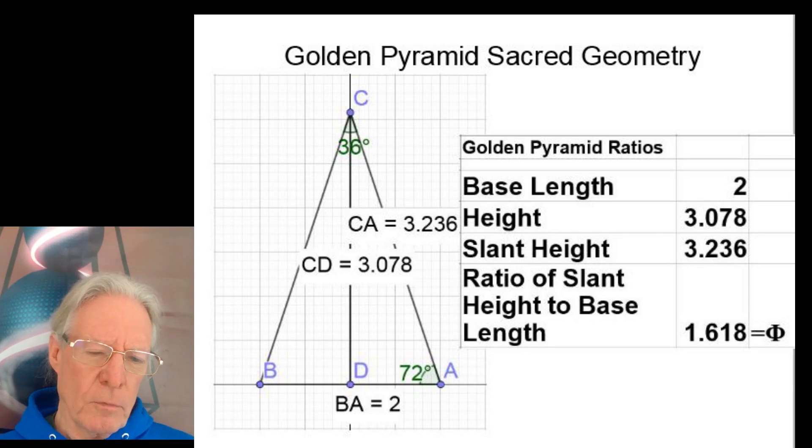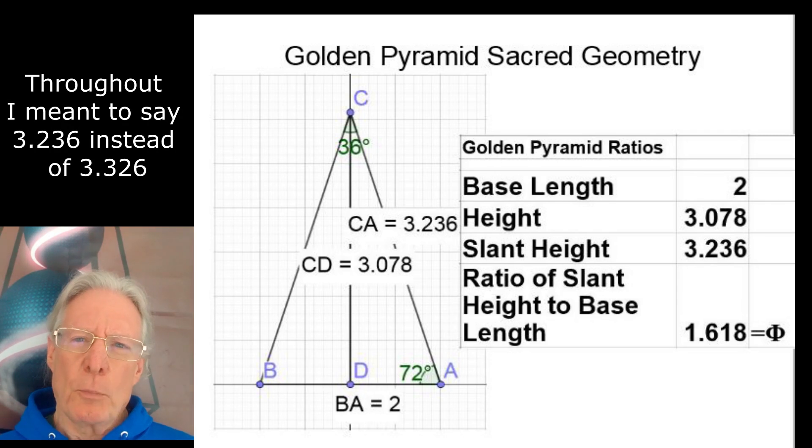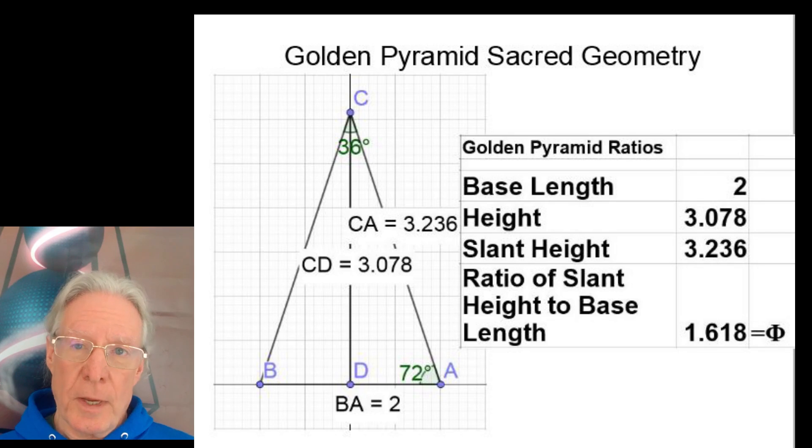The base length of a pyramid runs, in this case, from point B to point A, and in this case is 2. The height of the pyramid, which runs from point C to point D, is 3.078, and the slant height of this pyramid, it runs from point C to point A, is 3.326. Now, an important ratio to remember is the ratio of slant height to base length, which in the case of the Golden Pyramid, that's why we've highlighted in this case, is phi, or 1.618. So again, you determine that by taking the slant height from point C to A of 3.326, and dividing that by two, and you get a ratio of slant height to base length of phi.